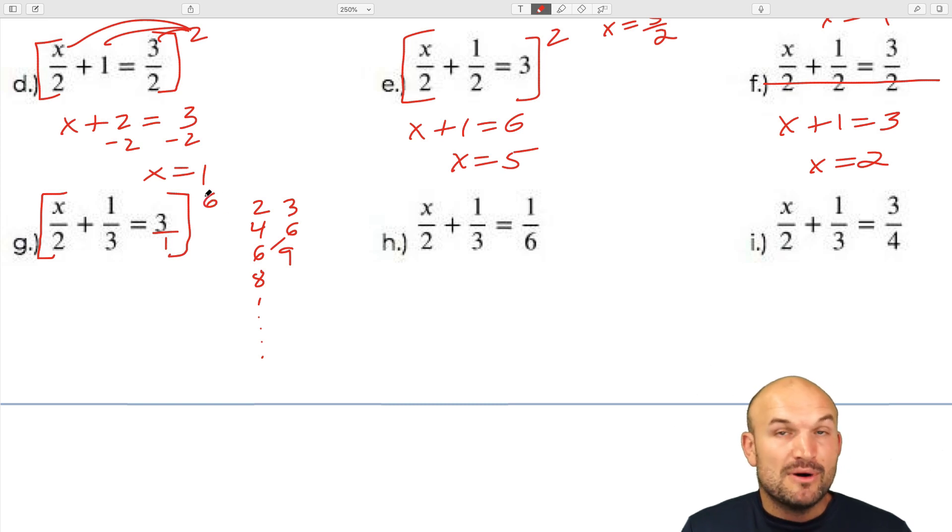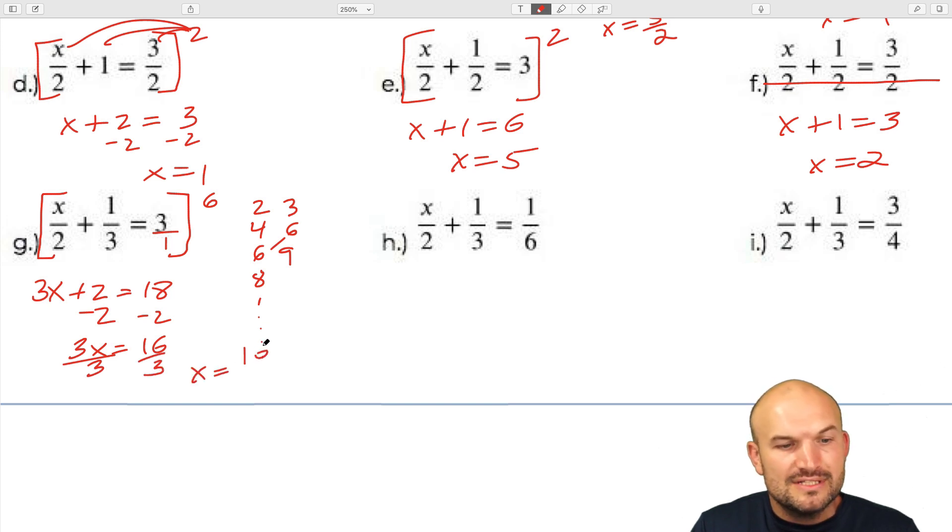So again, when I multiply everything times 6, what's so important about 6 is 2 divides into 6 how many times? 3 times. So therefore, you'd have 3 times x. 3 divides into 6 how many times? 2. 2 times 1 is 2. And then 1 obviously divides into 6 6 times. 6 times 3 is equal to 18. But again, by multiplying by the LCD, you guys can see that I eliminated my fractions. Now I can just subtract 2 on both sides. And 3x equals 16. And then divide by 3. So therefore, my final answer is x equals 16 thirds.